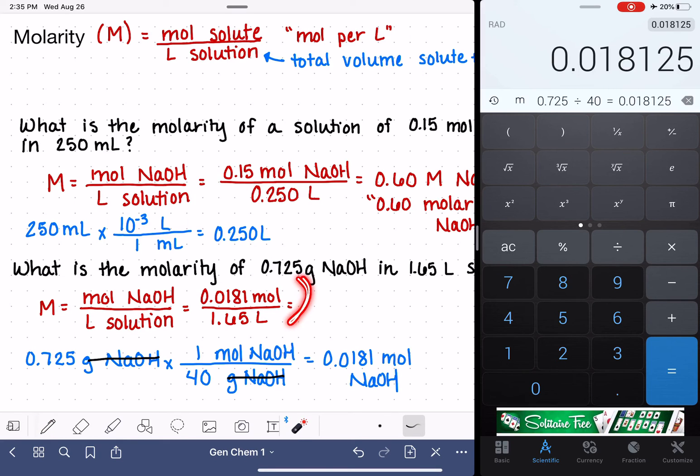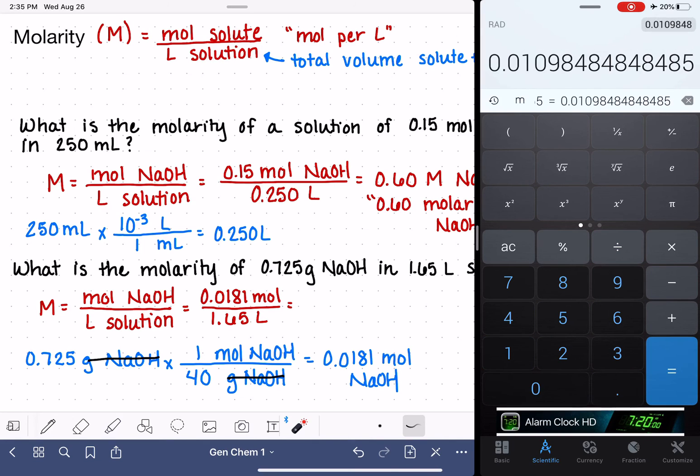Now I'm going to do this calculation right here, take my number of moles divided by the volume in liters. It looks like we should have three significant figures in our answer. So we have 0.0110 molar NaOH.